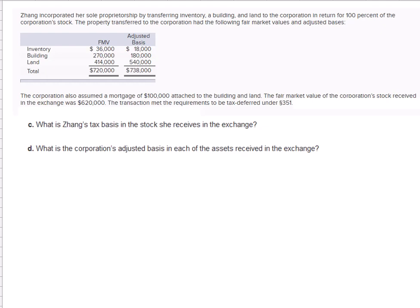Zhang incorporated her sole proprietorship by transferring inventory, a building, and land to the corporation in return for 100% of the corporation's stock. The property transferred to the corporation had the following fair market values and adjusted bases.